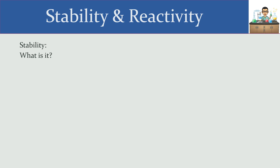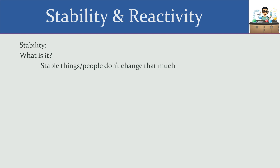To talk about stability, we first have to figure out what it is. Stability is all about things that really don't change all that much. Think about somebody who is at a stable job. It doesn't mean that person is very content with the job — they may not be happy with it — but if the job is stable, that means two weeks from now, that job will still be there. Stability isn't necessarily a good thing or a bad thing. If things are stable, it means they don't really change that much.